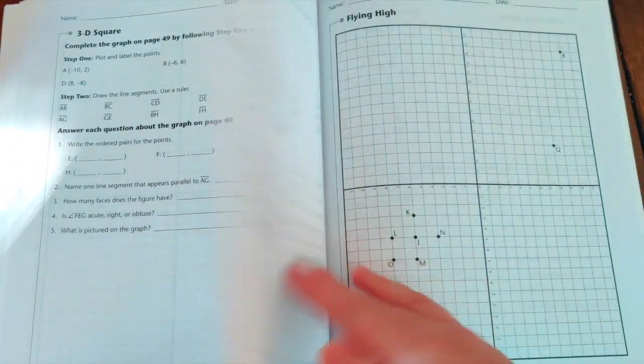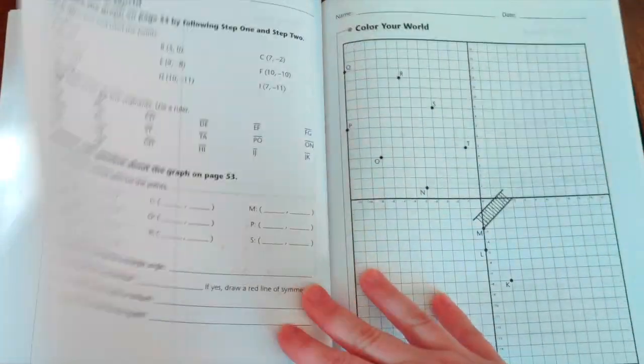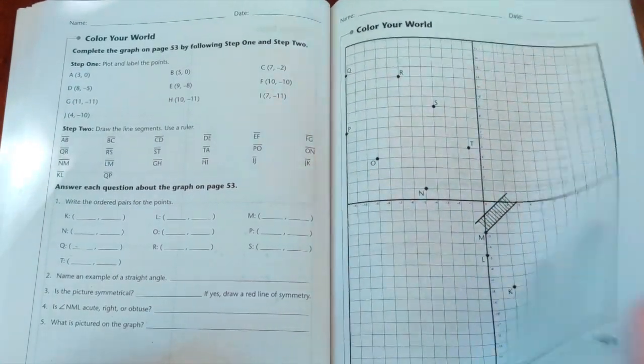Now here's one of the four quadrant ones. These are even more challenging. There's a little ladder. I wonder what that's going to be.